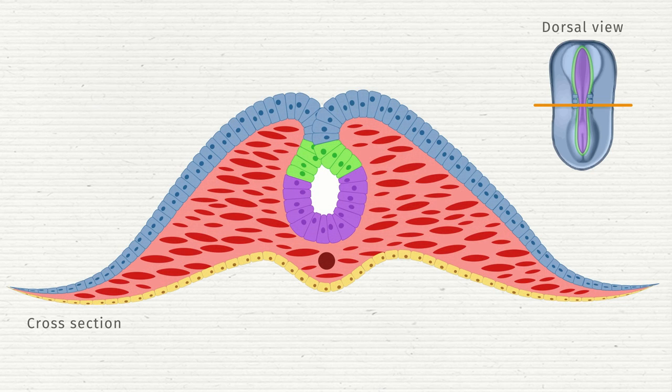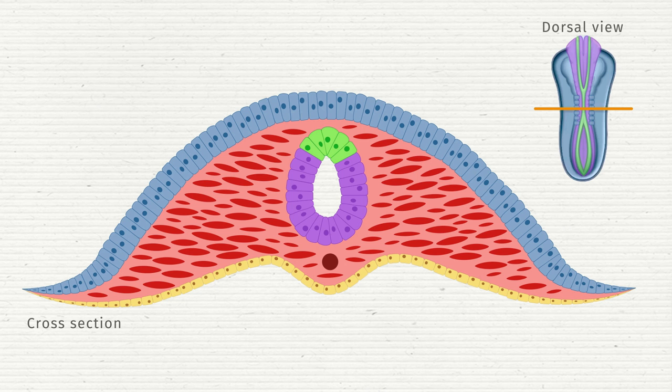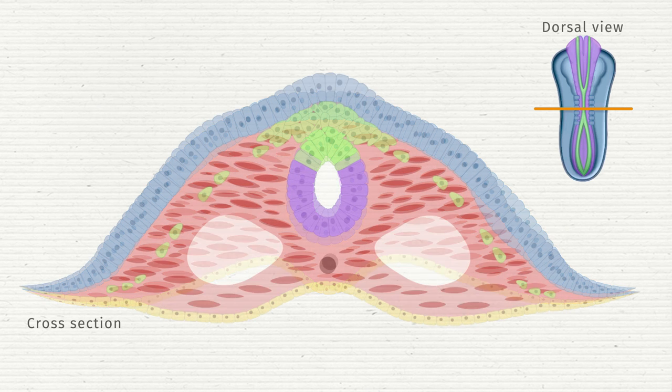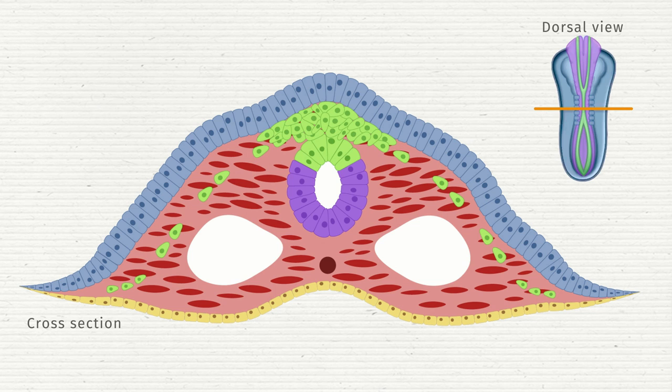When the neural tube fuses, the cells from the neural crest undergo an epithelial to mesenchymal transition in a rostrocaudal wave and take on stereotypical patterns of migration and give rise to various cell types.